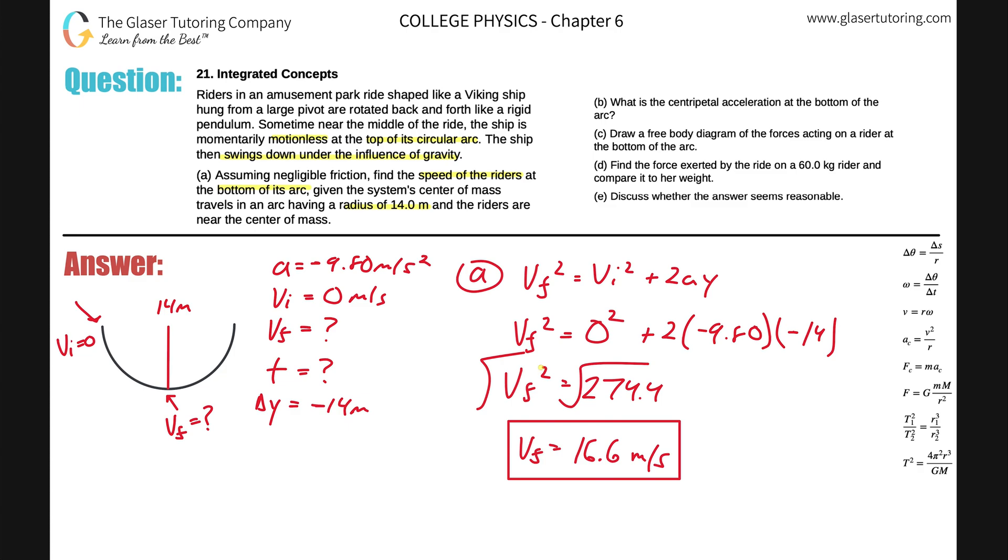Let's take a look now at letter B. It says, what is the centripetal acceleration at the bottom of the arc? If we look at our formulas over here on the right-hand side, we can look for some of the formulas that have centripetal acceleration in it. We know this one in particular, that the centripetal acceleration is equal to the velocity, the tangential velocity, or the linear velocity at a particular point, squared, divided by the radius of the arc, of the motion.